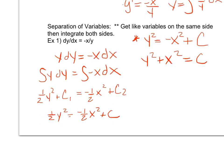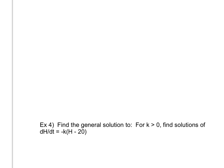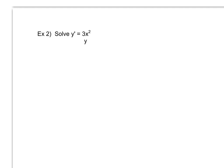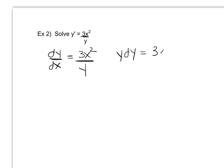Continuing with more examples of separation of variables: suppose I'm asked to solve y prime equals 3x squared over y. It's much easier if I turn y prime into dy/dx right away, because I'm going to anticipate having to use separation of variables and get like terms on the same side. Cross-multiplying gives me y dy equals 3x squared dx. I can then integrate both sides: the integral of y dy equals the integral of 3x squared dx.